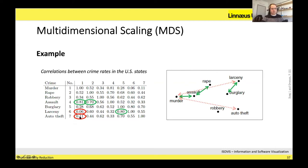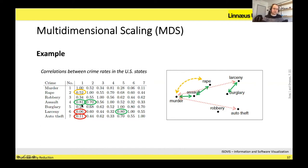Auto theft is not correlated with murder, so you can see it's all the way to the other side of the layout. And then rape, which has an average correlation with murder — about 0.52 — they're not super close but also not super far away; they're kind of halfway in the complete space of two dimensions. So basically, what you see in the correlation matrix should have a good correspondence with what you see in the projection — close points should be close, far points should be far.